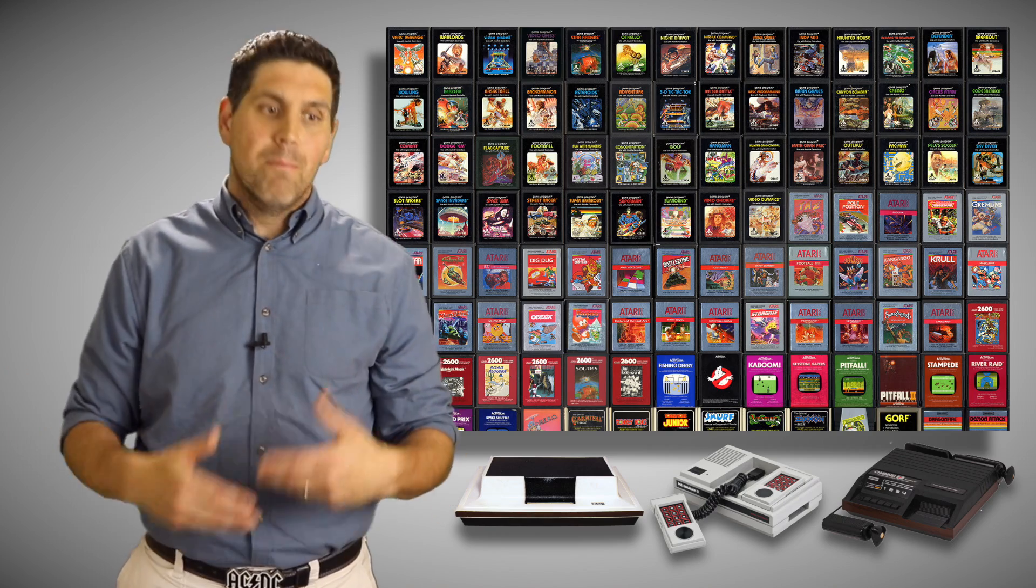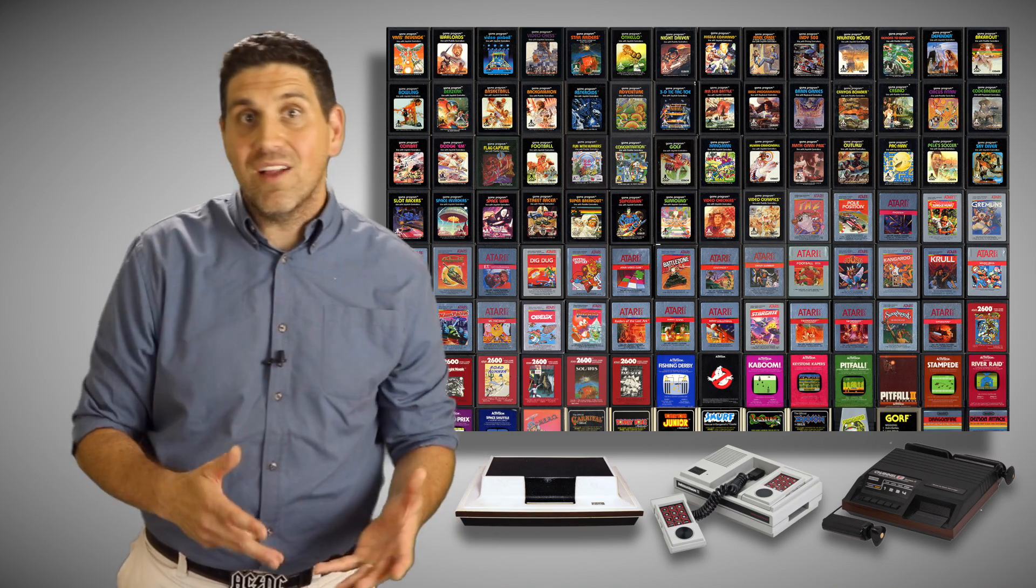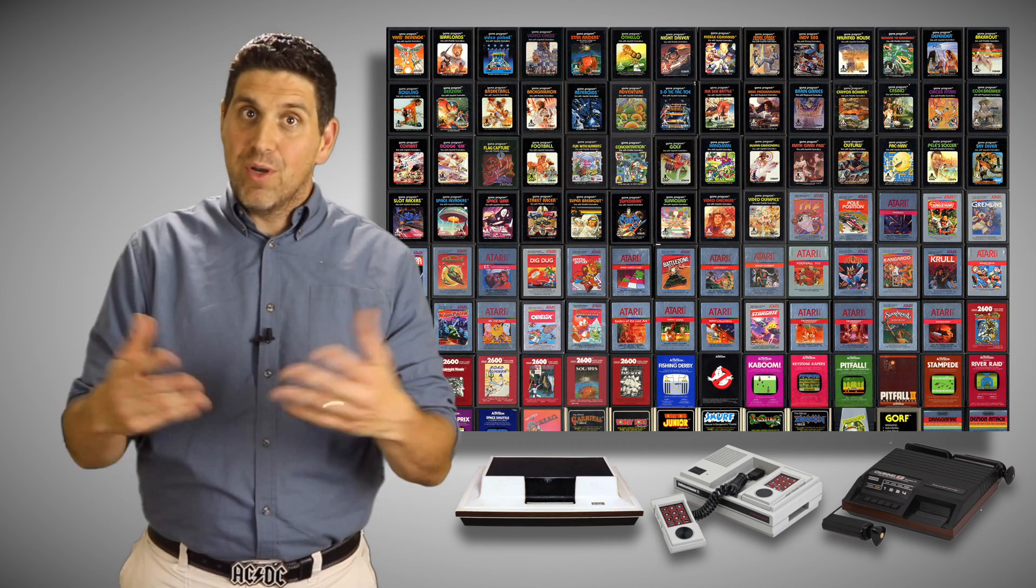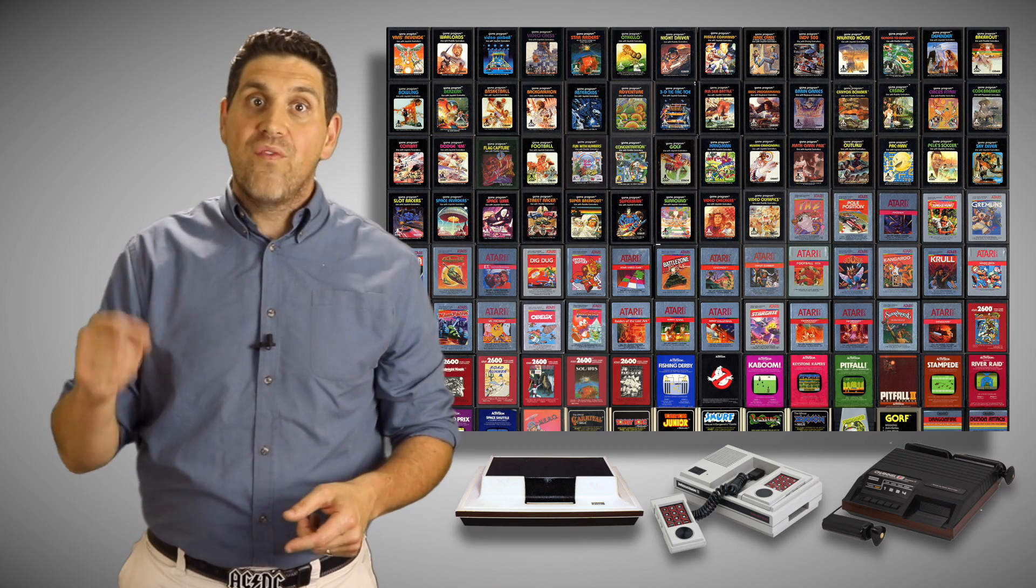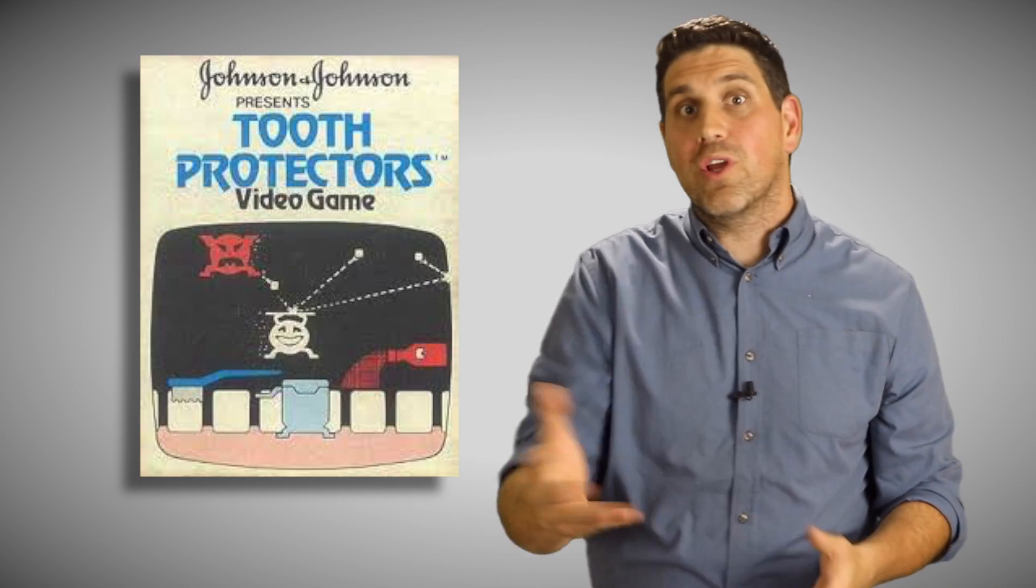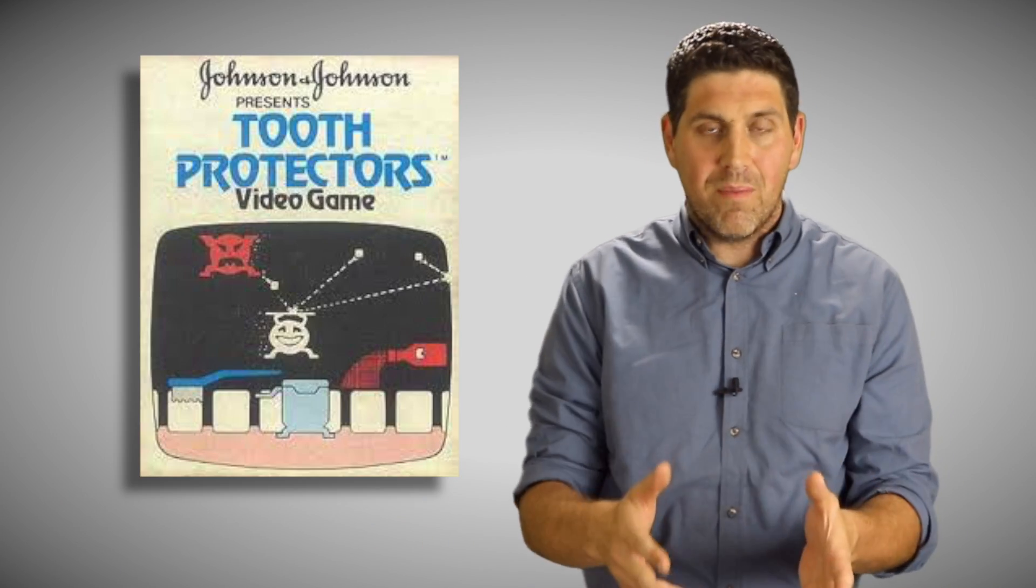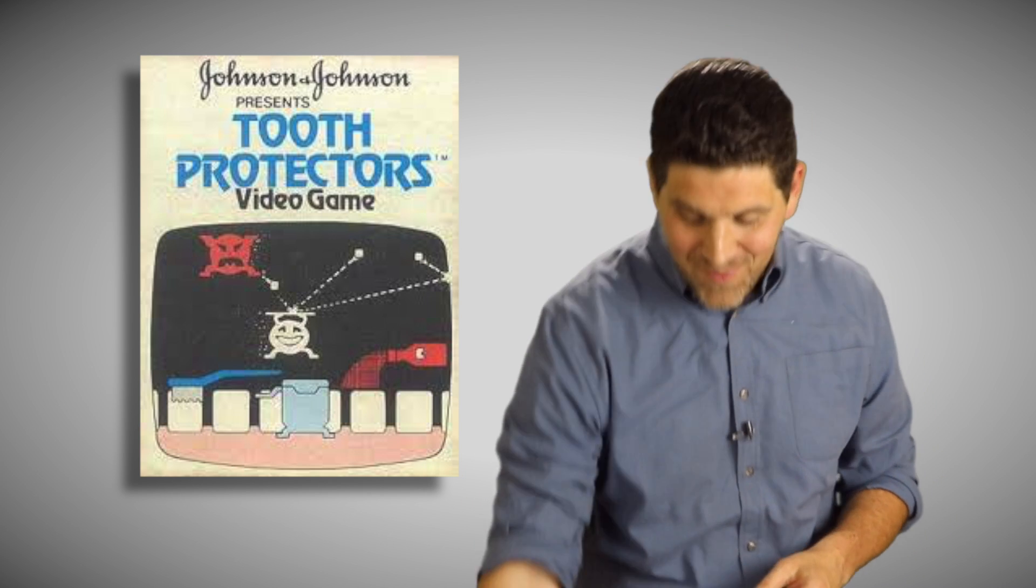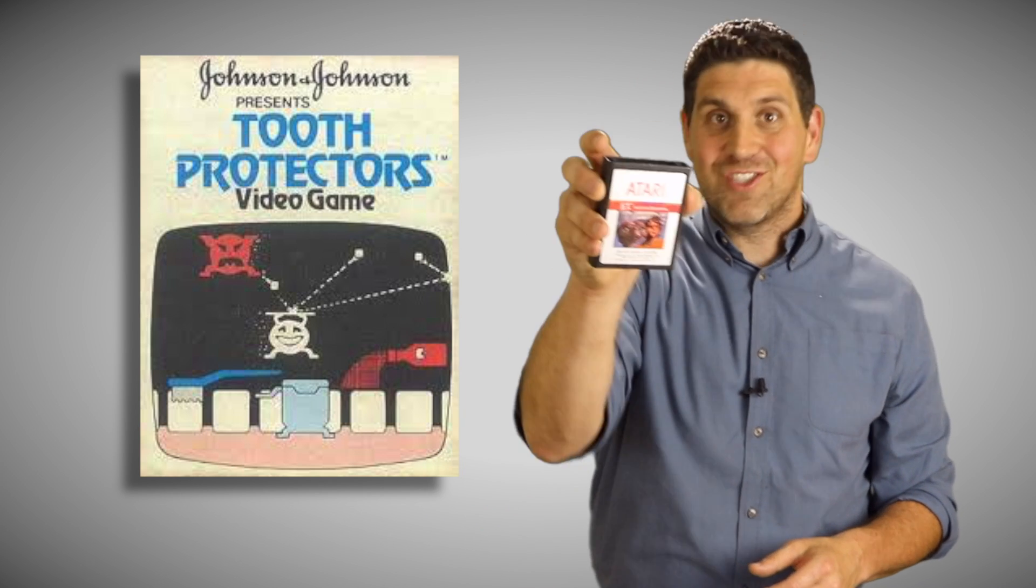And most economists would think that's a good thing, right? More competition means better games, better consoles. But a lot of these producers and developers of games were focusing more on quantity than quality. The market was flooded with poorly made games, usually from third-party developers that were just out to make a quick buck. And the best example: E.T. The Extraterrestrial.